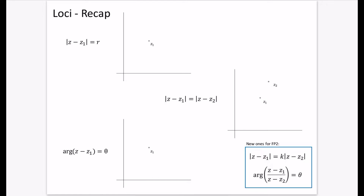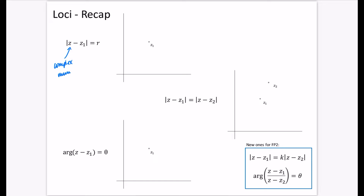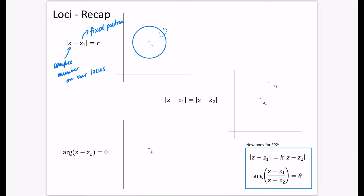The first locus is |Z - Z1| = r. Z is the complex number on our locus, and Z1 is a fixed position. What we're saying is that the distance between our number and the fixed one equals some constant r. This gives us a circle with centre Z1 and radius r, because anywhere from Z1 to the circle has the same distance.